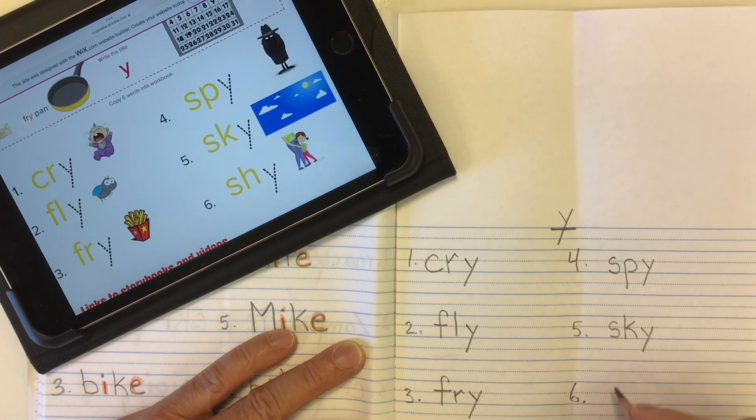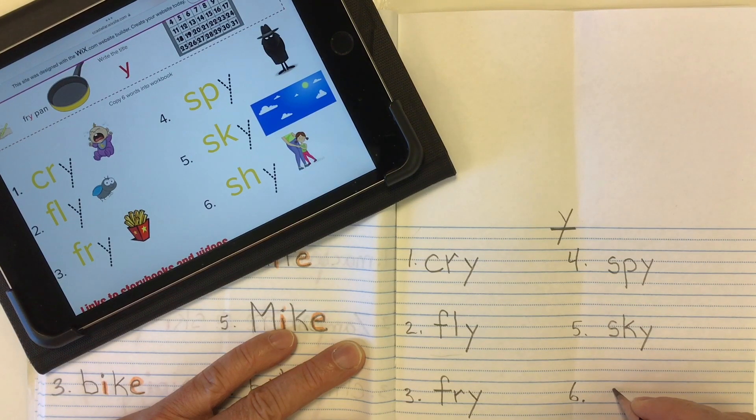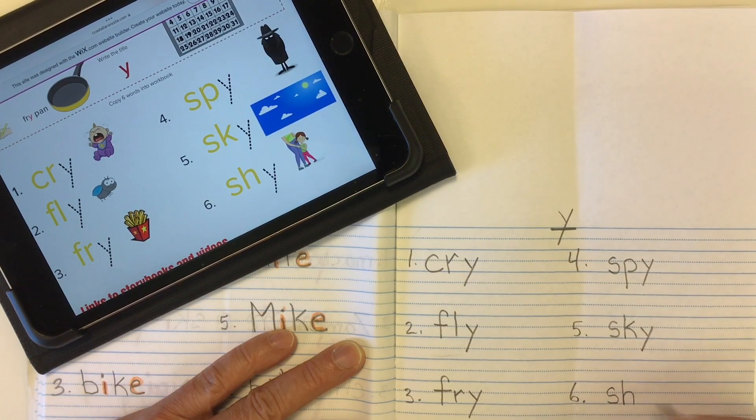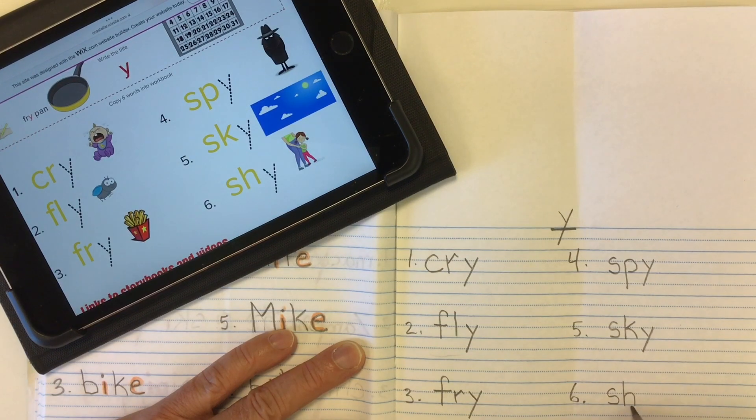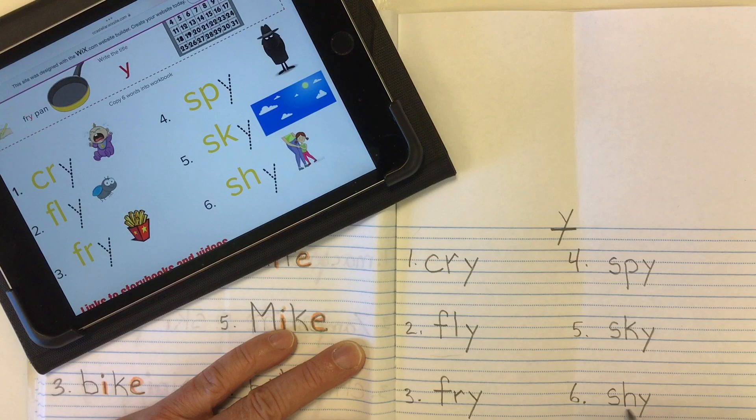Word number six is shy. Our sh comes from that digraph, S-H, sh, sh, I with the Y at the end, shy, shy.